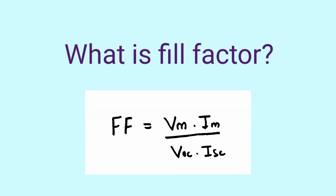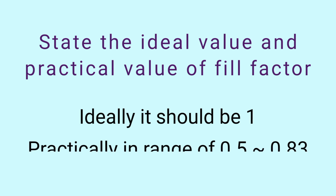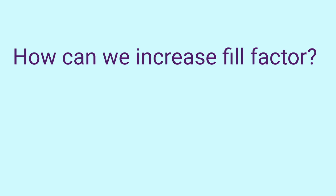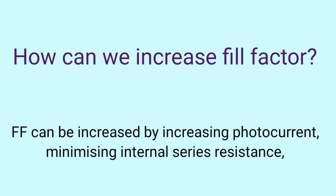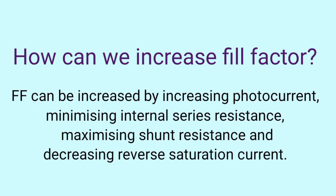Here is the formula for fill factor. State the ideal and practical value of fill factor. Fill factor indicates the quality of solar cell; ideally it should be 1, but practically we get the value in the range of 0.5 to 0.83. How can one increase fill factor? The fill factor value can be increased by increasing the photocurrent, minimizing internal series resistance, maximizing shunt resistance, and decreasing reverse saturation current.